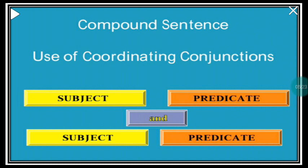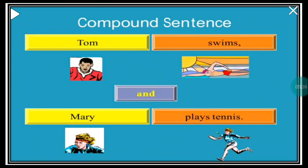The next compound sentence: 'Tom swims and Mary plays tennis.' This is a compound sentence because 'Tom' is the subject and 'swims' is the verb — that is one complete independent clause. 'Mary' is the subject and 'plays tennis' is the predicate — that is the second independent clause. You have two independent clauses being joined by the coordinating conjunction 'and.'